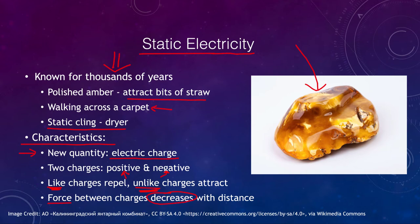That may sound familiar — we talked about the force of gravity and how it decreases with distance between two objects. The force between two electrical charges is similar; however, the difference is that gravitation is always an attractive force. Masses always attract each other. There is no material that repels gravitationally the way that things repel electric forces.